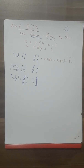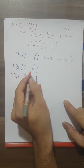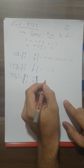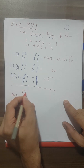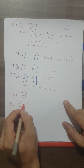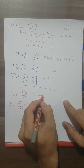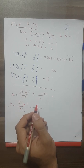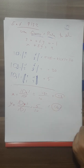Going directly to the results: D = 10, Dx = −20, Dy = 5. Then x = Dx / D = −20 / 10 = −2, and y = Dy / D = 5 / 10 = 1/2. That's the solution using Cramer's Rule.